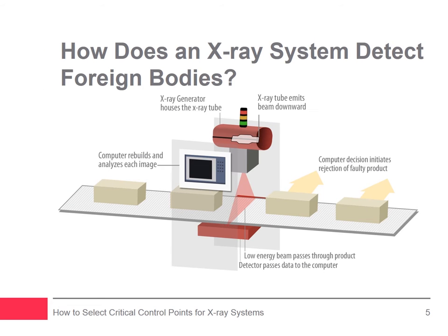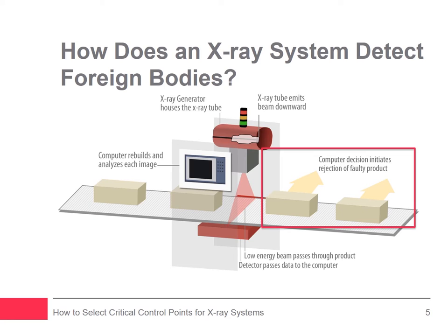An x-ray system is essentially a scanning device. When a product passes through the x-ray system, a grayscale image of the product is created. The software within the x-ray system analyzes the grayscale image and compares it with a predetermined acceptance standard. On the basis of this comparison, it either accepts or rejects the image. In the case of a rejection, the software sends a signal to an automatic reject system, which removes the product from the production line.